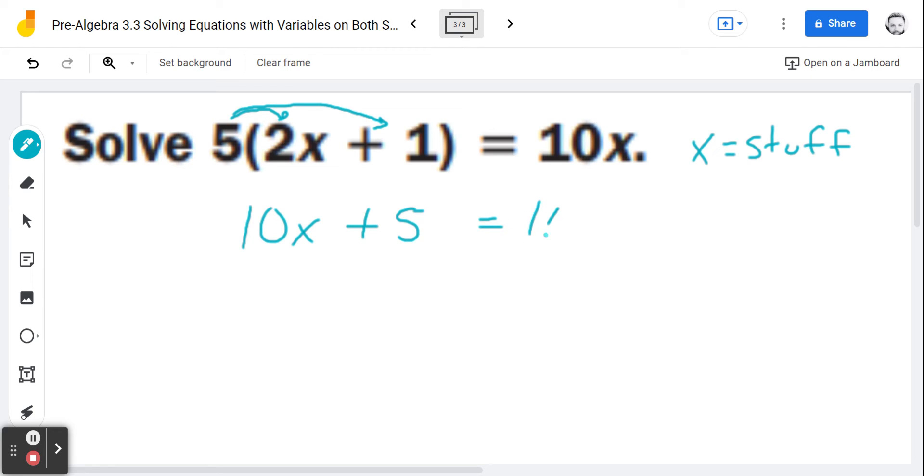And then over here, I just have 10x. Uh-oh. I got to move the 10x. Which one should I move? Let's move this one. How do I move this 10x right here? I want to move it to the other side. How do I move the whole thing?